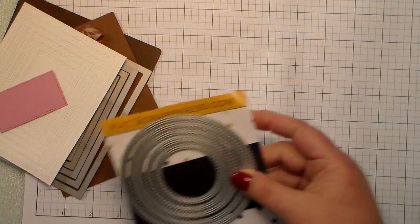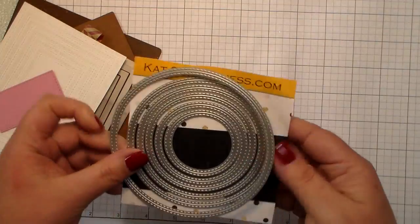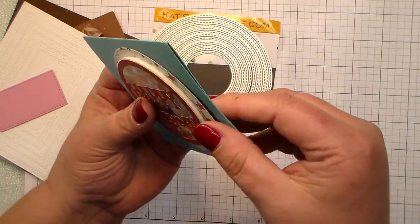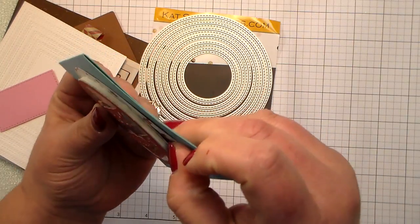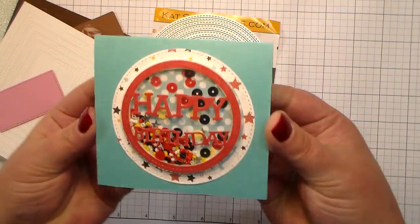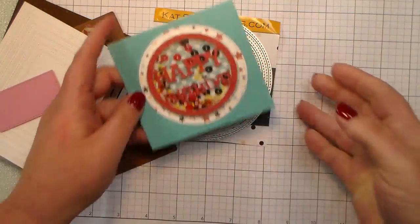Another thing these dies are awesome for are shaker cards. I used the circles to make this happy birthday shaker card. So you can use them for the background of your shaker and also for the frames that go on top.